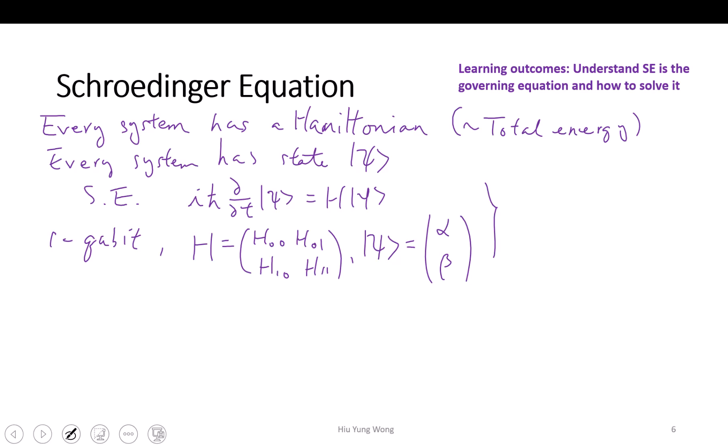So then Schrodinger equation becomes very easy. Actually in some sense, some people think that they should teach quantum mechanics from a qubit, from a spin, right? It's not all those difficult differential equation.